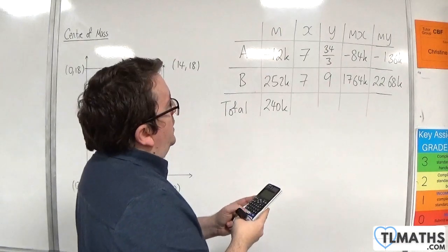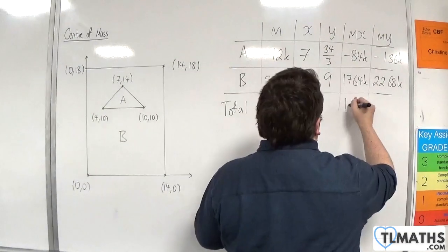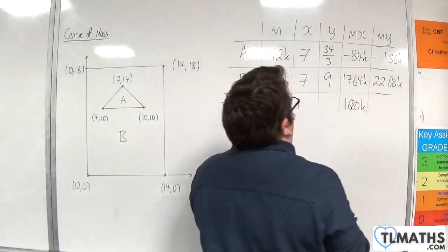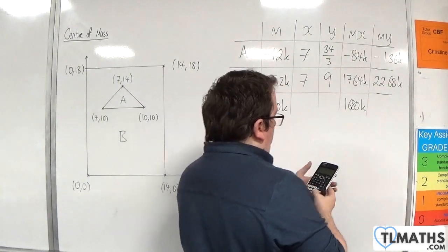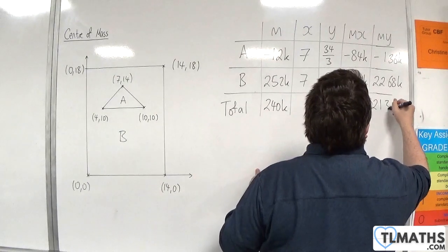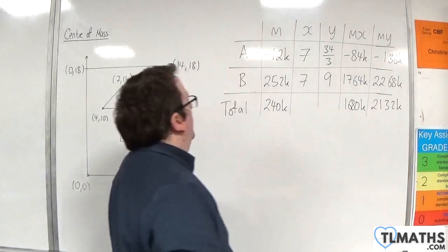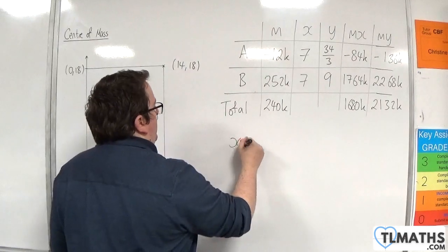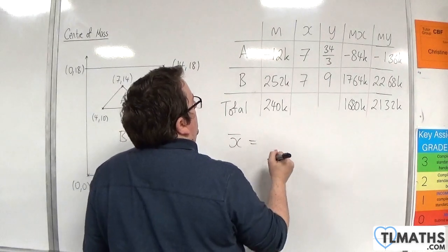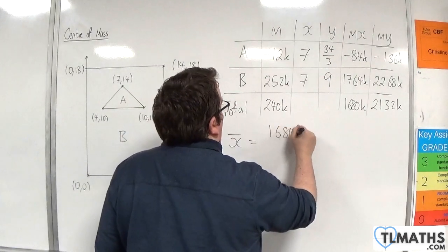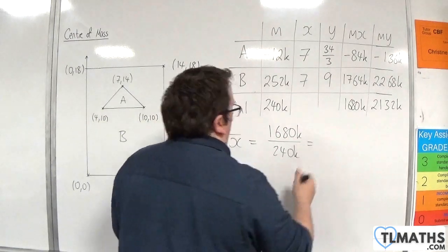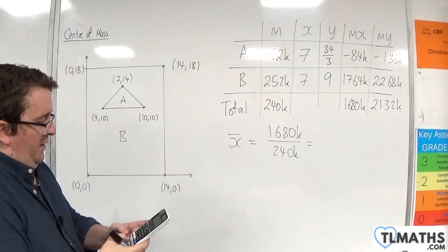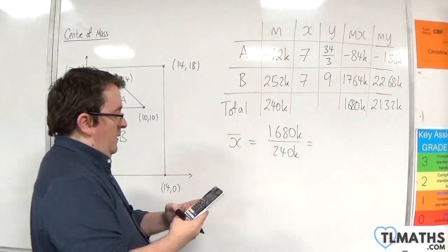So 1,764 take away 84 is 1,680. The average of the x's is going to be 1,680k over 240k, which hopefully should be 7. Yes.